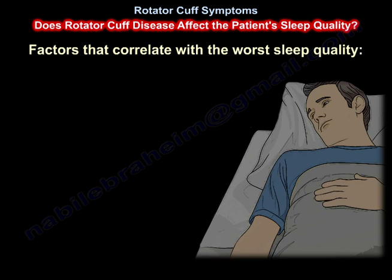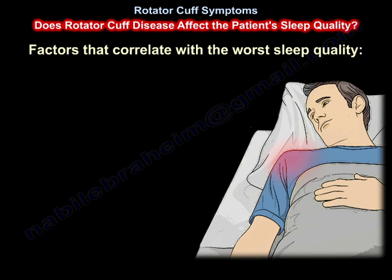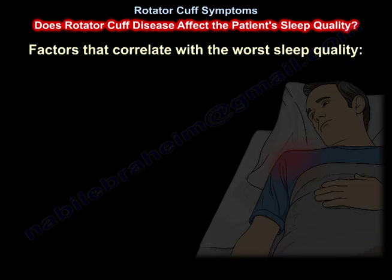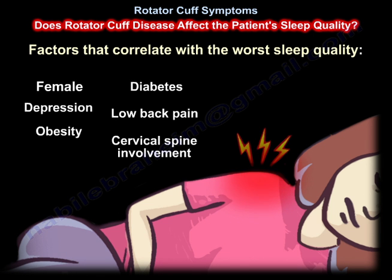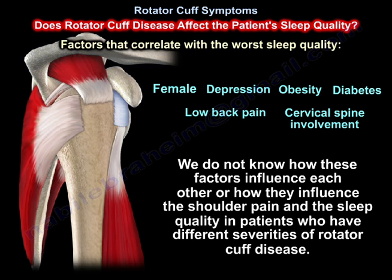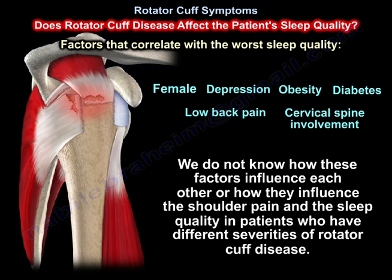There are factors that correlate with worse sleep quality: female sex, depression, obesity, diabetes, low back pain, and cervical spine involvement. We don't know how these factors influence each other, or how they influence shoulder pain and sleep quality in patients who have different severities of rotator cuff disease.